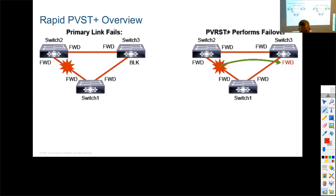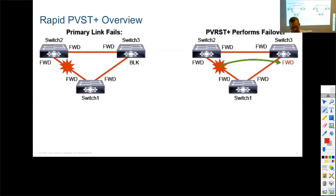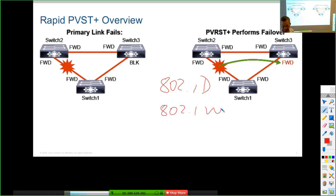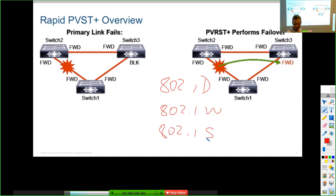We're looking at Rapid Per-VLAN Spanning Tree. Let me detail the spanning tree types because tests will ask about these. The original spanning tree is 802.1D. IEEE then expanded it, and Rapid Per-VLAN Spanning Tree is recorded as 802.1W. There is also 802.1S, which is Multiple Spanning Tree. They all behave a bit differently, but the original is still 802.1D.